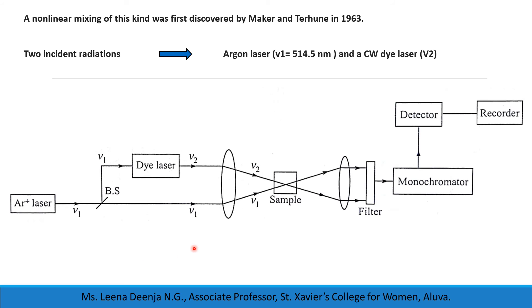The figure shows a typical CARS setup where two incident radiations are provided by an argon-ion laser of wavelength 514.5 nm and a dye laser. The dye laser is tunable, so we can vary the frequency ν₂ such that ν₁ − ν₂ = νM. This continuous wave dye laser is pumped by the same argon-ion laser. The frequencies are mixed temporally and spatially within the sample.